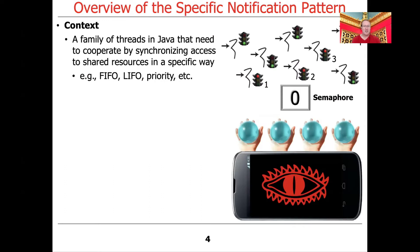Here's the context for the pattern. Imagine that we have a family of threads in Java that need to cooperate by synchronizing access to shared resources in a specific way, in a first-in, first-out order, perhaps a last-in, first-out order, some prioritized order, and so on.